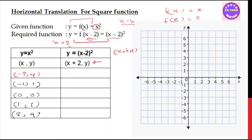y equals x squared. Now, if we have the mapping with h equals 2, we add x plus 2 to get the new x-coordinate. So the transformed point becomes x plus 2 comma y. If x plus 2 gives minus 2 plus 2 equals 0, and minus 1 plus 2 equals 1.